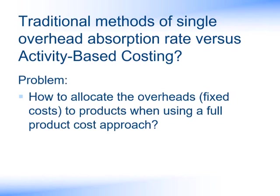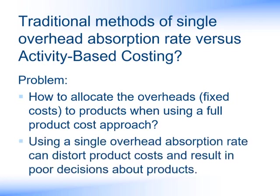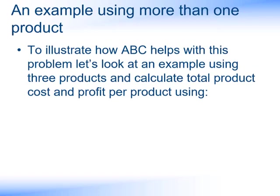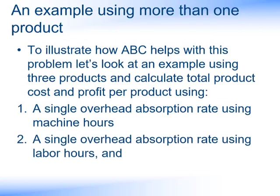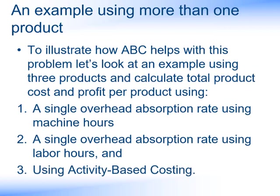One of the problems we have with overheads is how to allocate them to products when using a full product cost approach. Traditionally, we'd use a single overhead absorption rate, but as explained in the first video in this series, this can distort product costs and also potentially result in poor decisions being made about products. To illustrate how ABC helps with this problem, let's look at an example using three products and calculate the total product cost and the profit per product using, firstly, a single overhead absorption rate using machine hours. Then we'll quickly recalculate using labour hours. And finally, we'll use activity-based costing.